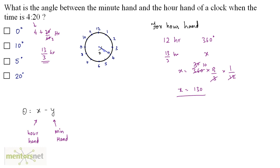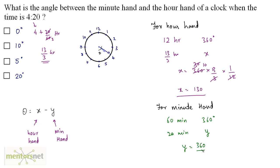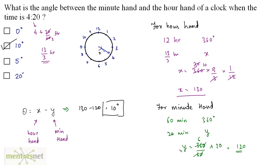Now let's calculate for the minute hand. In 60 minutes the angle traced is 360 degrees. There are 20 minutes, so y is equal to 360 divided by 60 times 20. 20 times 6 is 120, so y is 120 degrees. Therefore theta is equal to 130 minus 120, and that's 10 degrees. So option B is the correct answer.